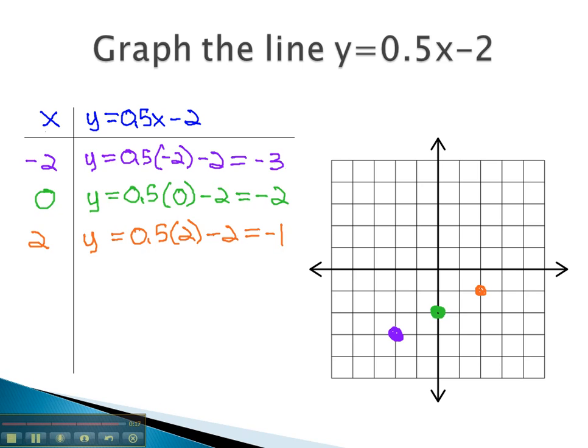Notice we can connect these dots using a straight line. This line means any point on the line, for example (4, 0), will make this equation a true statement.